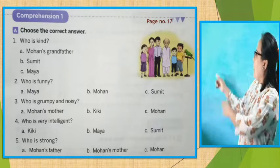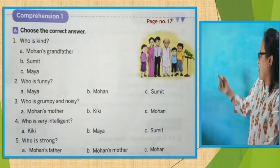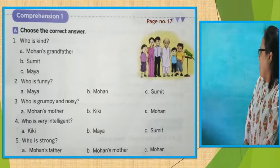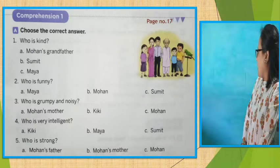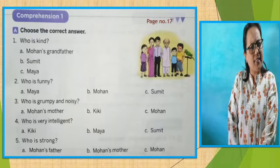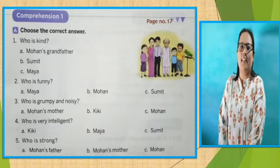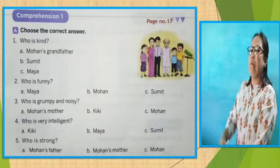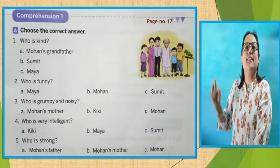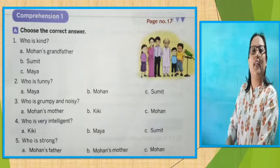Let's go to number 4. Who is very intelligent? The options are number A, Kikiki. Number B, Maya. Number C, Sumit. Children, in the story, who was intelligent — who was reading a book? Yes. The answer is option B, Maya. Mohan's sister — you remember? She was very intelligent. Not 'was,' you can say she is very intelligent.